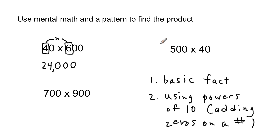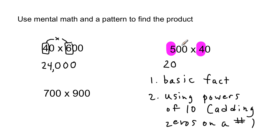Let's apply the same skill to the next problem. If you have a highlighter, these things are good to highlight. So if I identify the basic fact of 500 times 40, it's going to be five times four. Five times four is twenty. Now, a lot of students want to say they already wrote one of the zeros so they don't have to write all three extra ones. But twenty is the basic fact — you write that, then write all three zeros on the end. Five hundred times forty is twenty thousand.